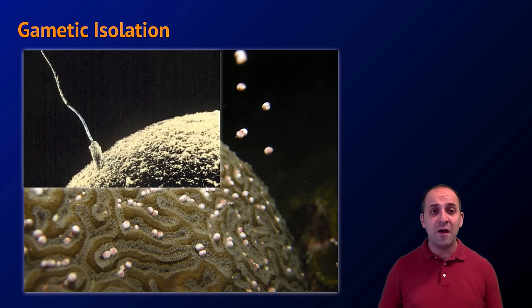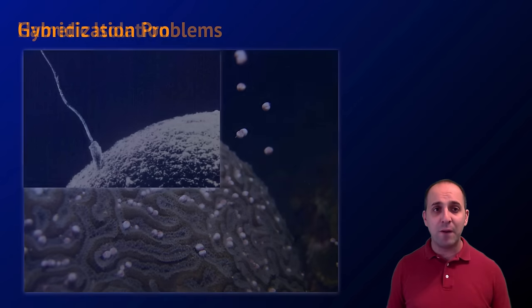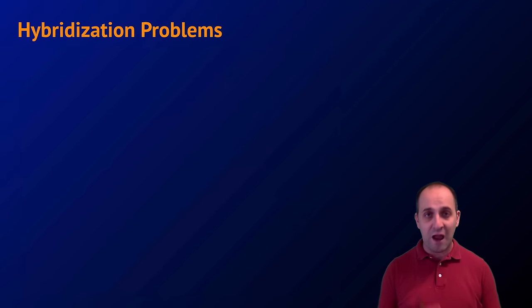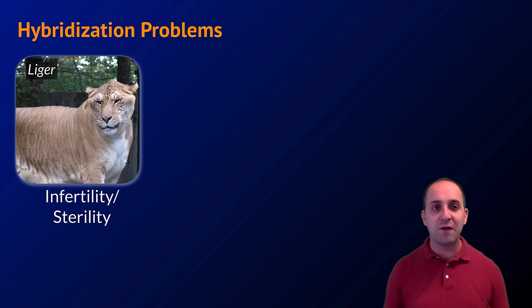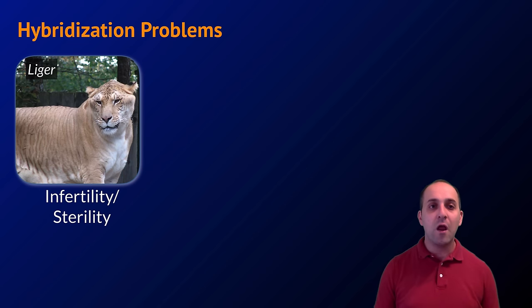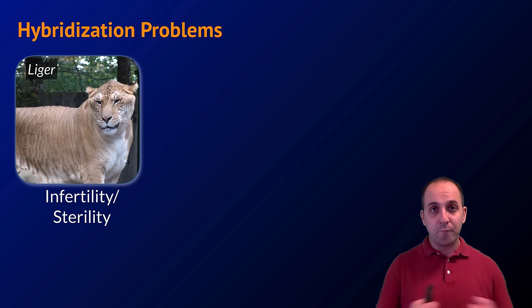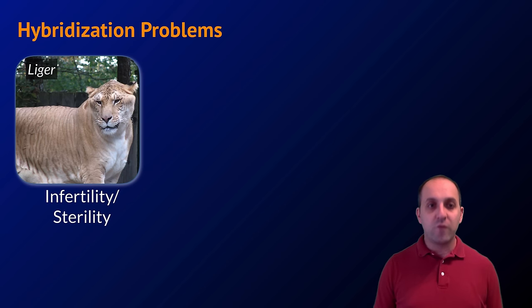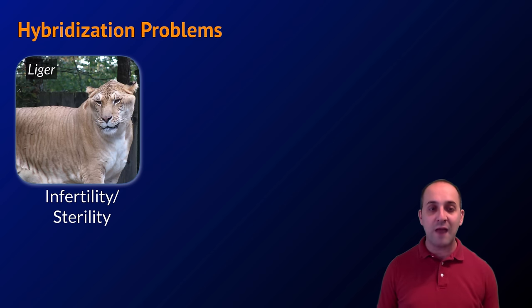All of those things occur before the zygote. But even after the zygote forms, we can have postzygotic barriers, which all refer to differences in the reproductive ability of the hybrid produced from a reproductive event between two species.